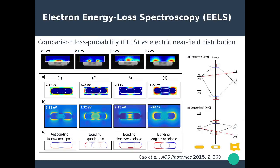We can wonder how those loss probability maps actually compare to electric field maps that we've been discussing so far. This is a simple comparison on a nanorode — a nanorode with a void inside — composed of silver. These are experimental EELS maps generated on one side of the nanorode for four different plasmon modes. Using a plasmon hybridization diagram, you can identify the bonding and anti-bonding combinations that form the modes of this void nanorode, along with transverse and longitudinal plasmon resonances — at least four different modes that can coexist.